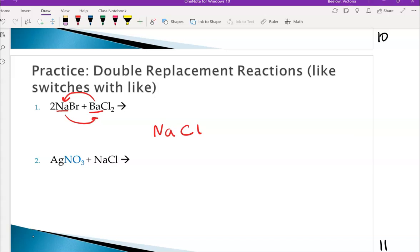Just start by writing the two elements that are going to go together with each other. So Na and Cl will be together and Ba and Br will be together.